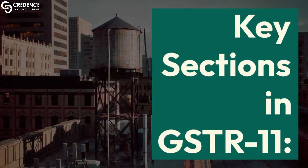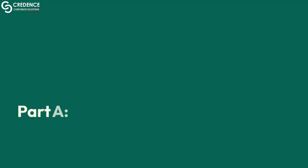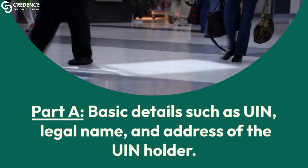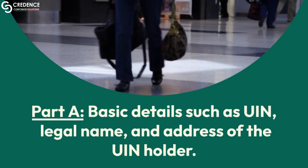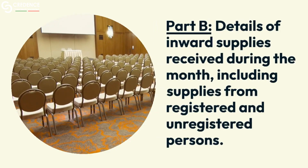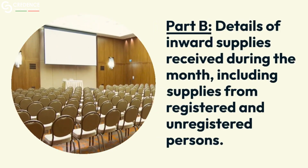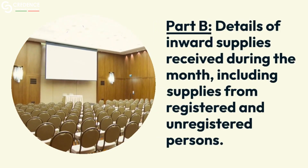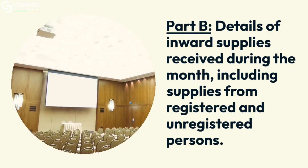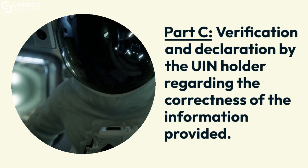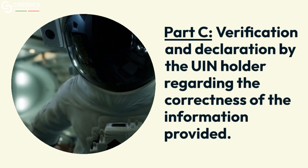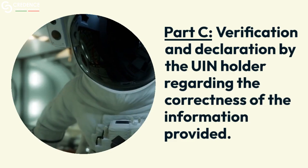Key Sections in GSTR 11. Part A: Basic details such as UIN, legal name, and address of the UIN holder. Part B: Details of inward supplies received during the month, including supplies from registered and unregistered persons. Part C: Verification and declaration by the UIN holder regarding the correctness of the information provided.